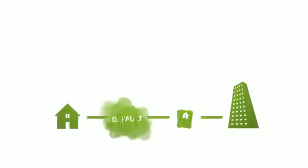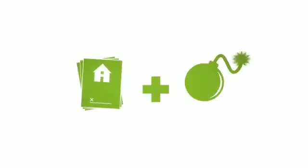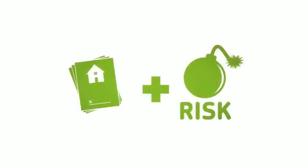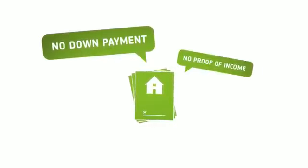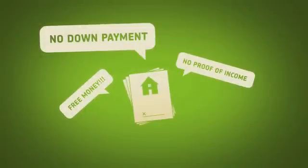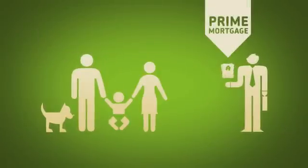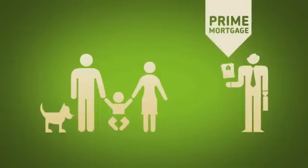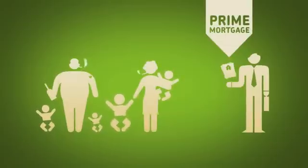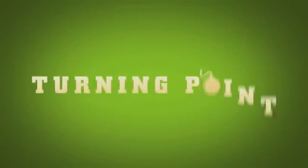When homeowners default on their mortgage, the lender gets the house, and houses are always increasing in value. Since they're covered if the homeowners default, lenders can start adding risk to new mortgages: not requiring down payments, no proof of income, no documents at all. And that's exactly what they did. So instead of lending to responsible homeowners, called prime mortgages, they started to get some that were less responsible. These are subprime mortgages. This is the turning point.